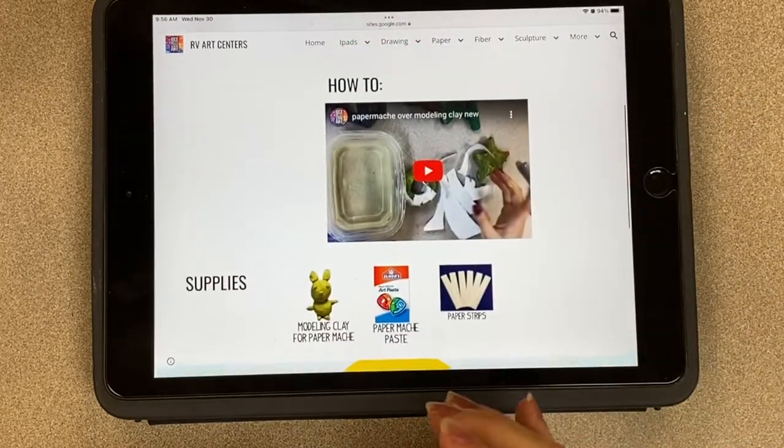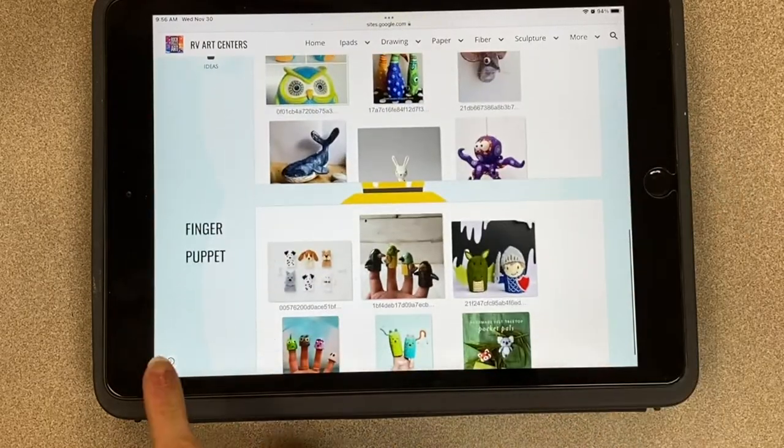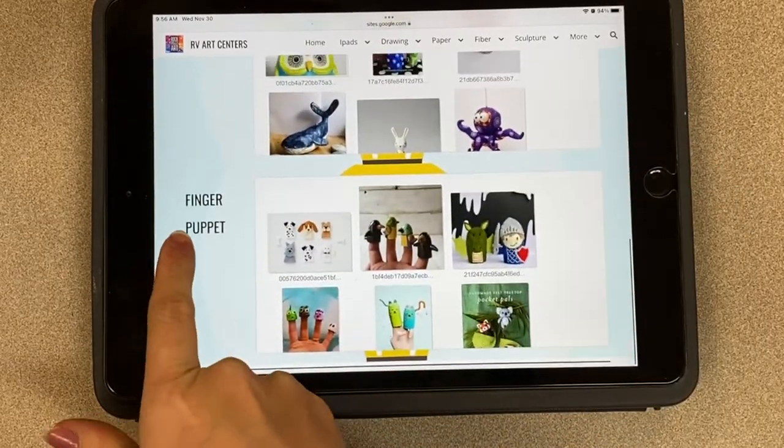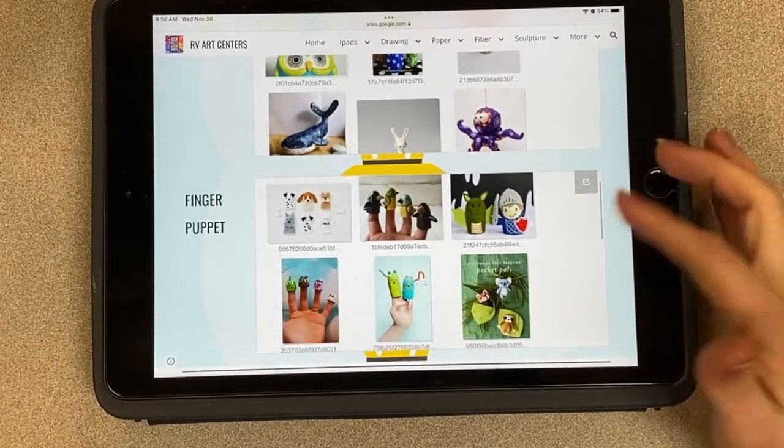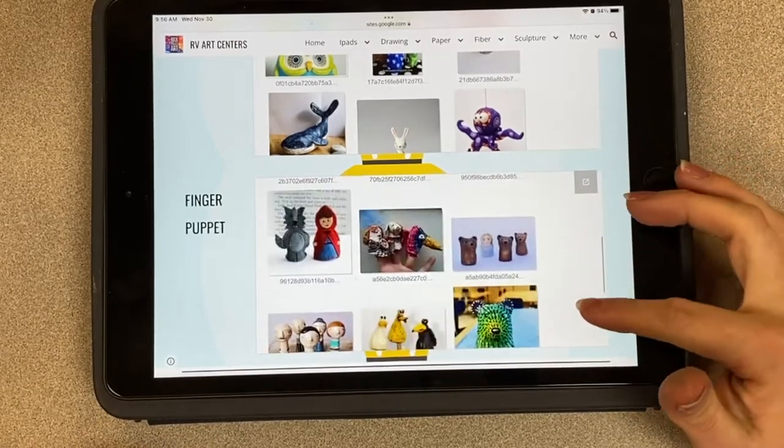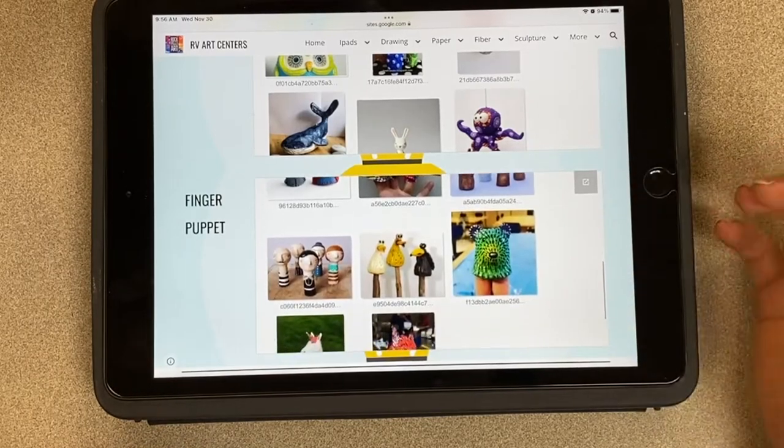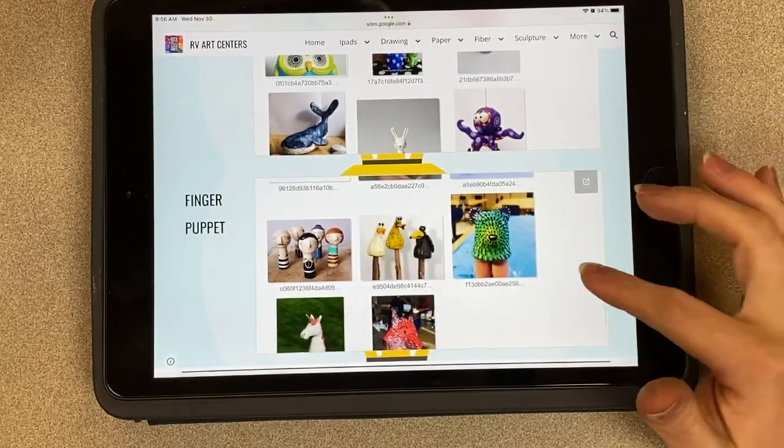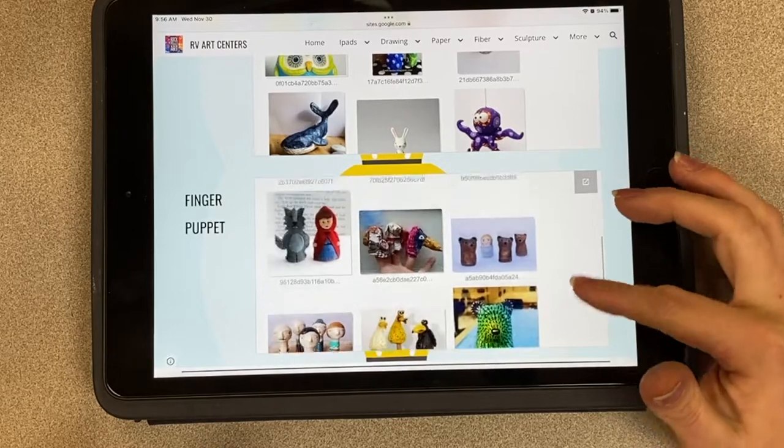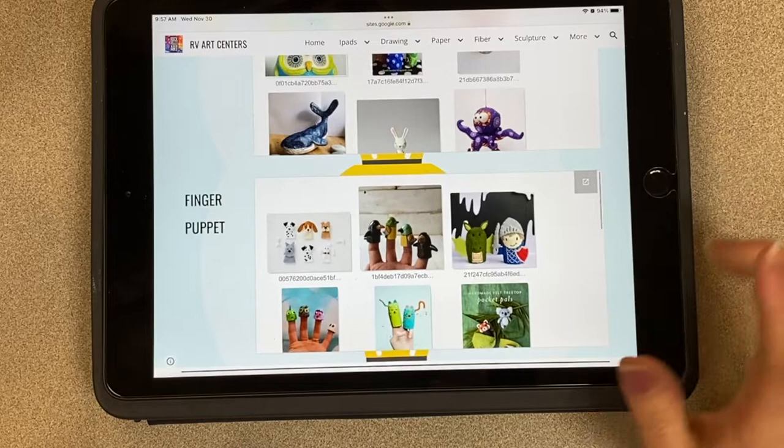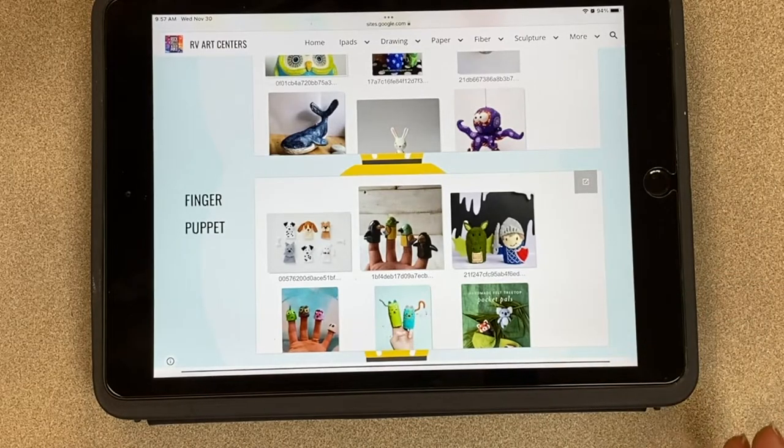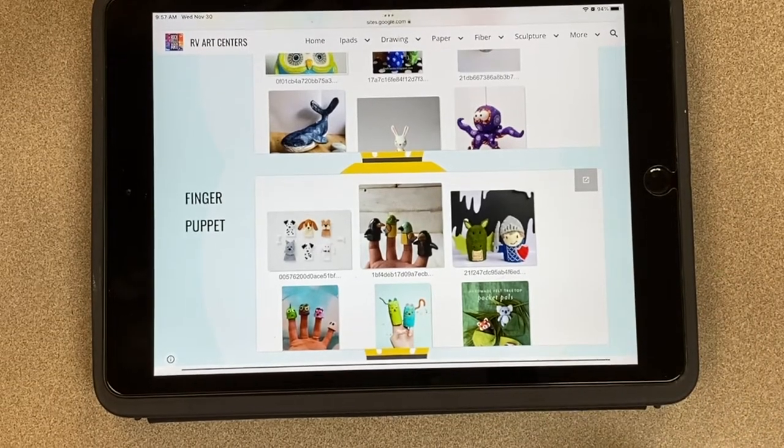Below you will find some ideas that says finger puppet. You can just scroll and look for an idea. Most of the ideas are like animals or other things. You can also use Google and look up your own because I don't have too many examples. I think I might just do a bird for this example but you can do whatever you want.